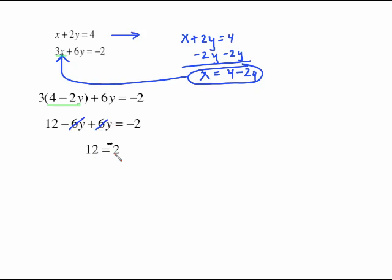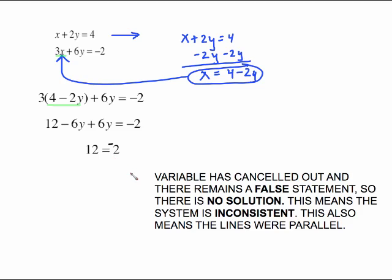We have no variable, which makes you think you did something wrong, but you did not. This is a special situation. If the variable has canceled out and there remains a false statement, 12 doesn't equal negative 2, so that's a false statement. That means there is no solution to this system of equations. The terminology we use is that the system is inconsistent, and it also means if we had taken the time to graph these, you would have seen that the lines are parallel.